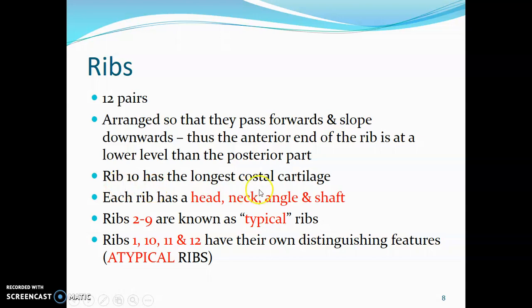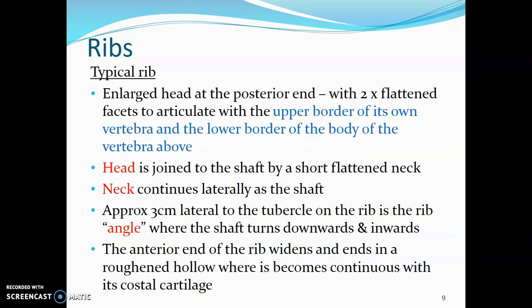The 10th rib has the longest costal cartilage. Each rib usually has four parts: the head, neck, angle, and the shaft. The second to ninth ribs are known as typical ribs — they have common features. While the first rib and the 10th to 12th ribs have their own distinguishing features and are called atypical ribs.